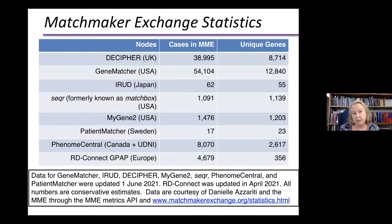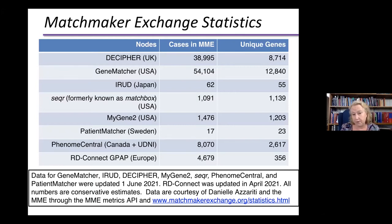These are the different nodes connected through the Matchmaker Exchange. Not every node has to match to every other — that's an option of the node controllers. GeneMatcher has by far the largest number of cases and unique genes, followed by Decipher, which has about 250 different collaborating efforts including the large-scale Deciphering Developmental Disabilities study in the UK. New nodes continue to add on and new patients are included.